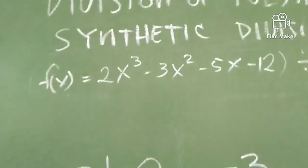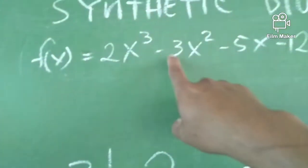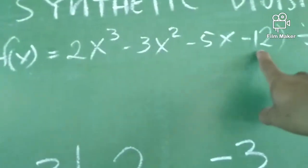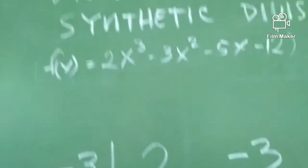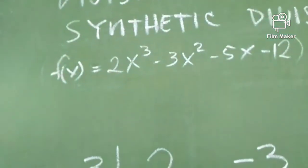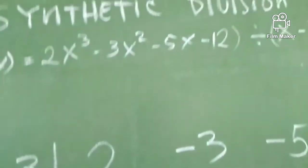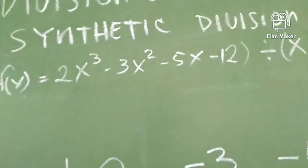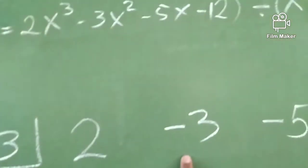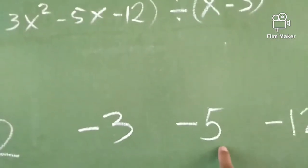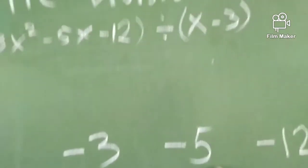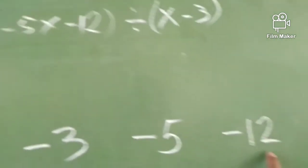Lahat ng mga constant term natin dito, ibababa natin din sila separately. 2x cubed, so 2. Negative 3x squared, negative 3. Negative 5x, sinulat ko rin dito, is negative 5. And negative 12, nilagay ko dito, is negative 12.